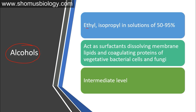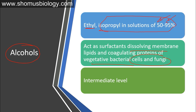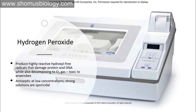Alcohols — ethyl alcohol and isopropyl — in solution of 50 to 95% can be used. They act as dehydrating agents that dissolve membrane lipids and coagulate proteins in vegetative bacterial cells and fungi. Alcohol is not effective against spores, so it is non-sporicidal, and has intermediate level of activity against microorganisms.